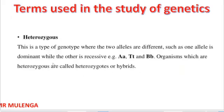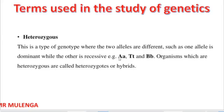We now look at heterozygous. Hetero means different. Heterozygous refers to the type of genotype where the two alleles are different — for example, one allele is dominant while the other is recessive. We can write this as capital A and small a, or capital T and small t, or capital B and small b. This is called heterozygous because the organism has different alleles — one dominant and one recessive.